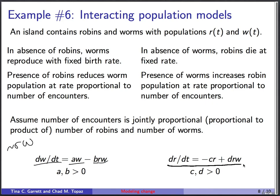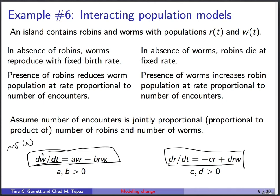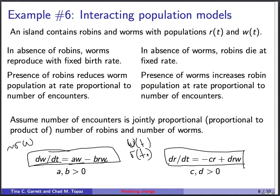So these two equations together form our system. Just so you don't lose sight of things: this is two ordinary differential equations with one independent variable t but two dependent variables, w and r. The unknown functions are w of t and r of t. The goal is that eventually, knowing the rules for how these things change, you'd be able to figure out what w and r actually are.